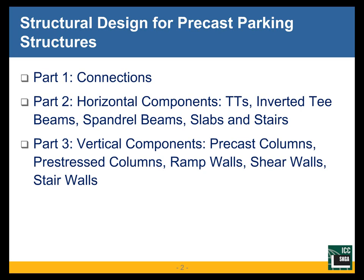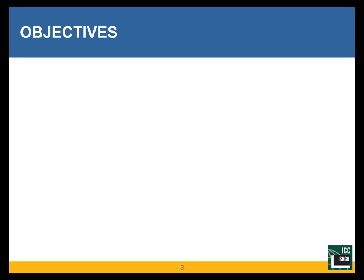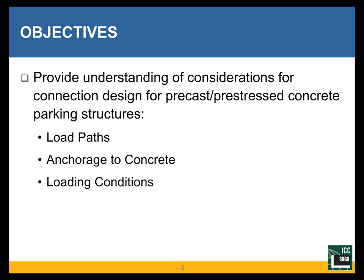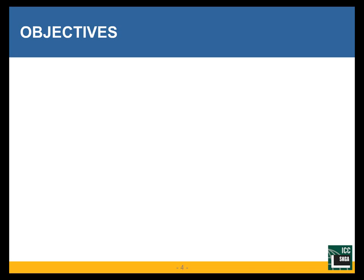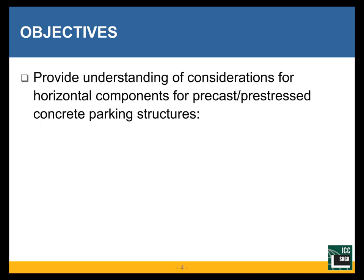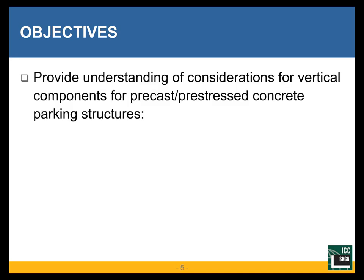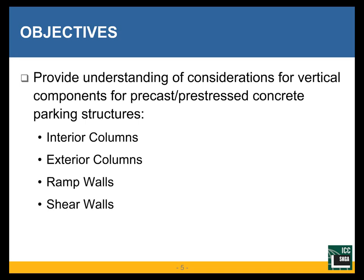In part three, we'll talk about vertical components: prestressed columns, ramp walls, shear walls, and stair walls. The objectives are to provide an understanding of the considerations for connection design for prestressed concrete parking structures — looking at load paths, anchorage to concrete, loading conditions, and types of connections. We'll also cover horizontal components including double T's, inverted T beams, spandrel beams, flat slabs and stairs, and finally vertical components including interior columns, exterior columns, ramp walls, shear walls, and stair walls.